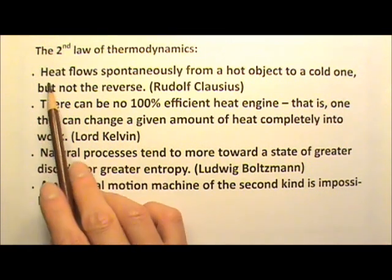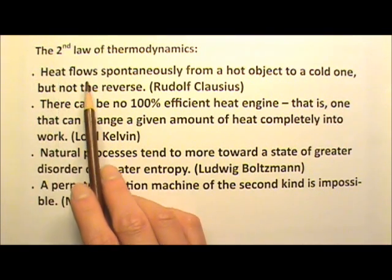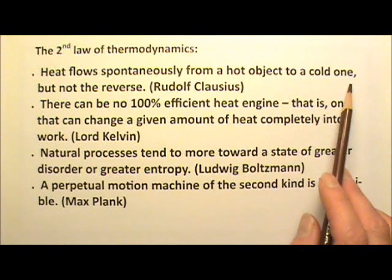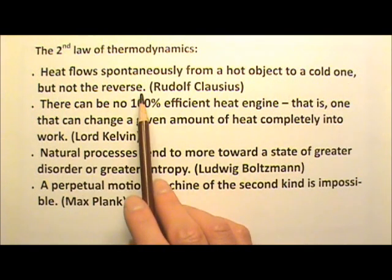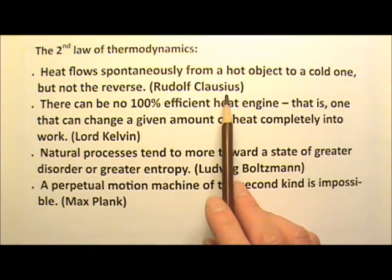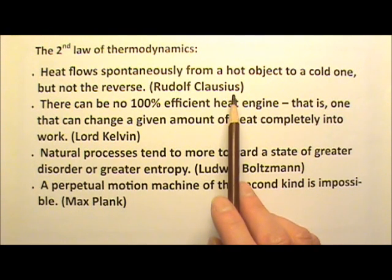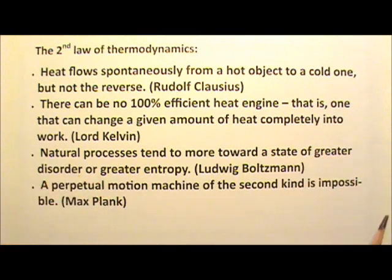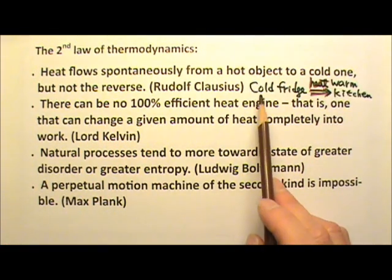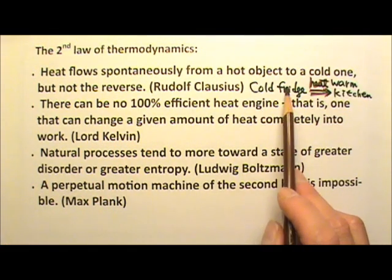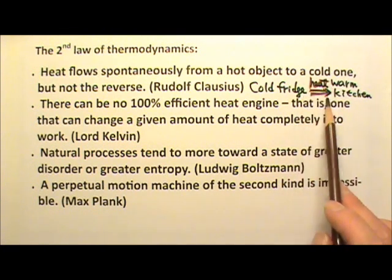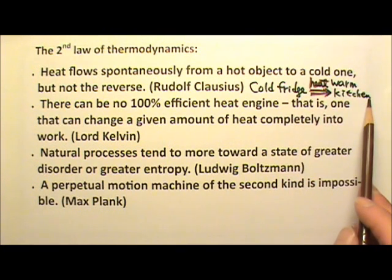The first statement is by Rudolf Clausius: heat flows spontaneously from a hot object to a cold one, but not the reverse. This Clausius statement basically says that there are no free refrigerators, in the sense that the colder inside of a refrigerator cannot dump heat into a warmer kitchen spontaneously.